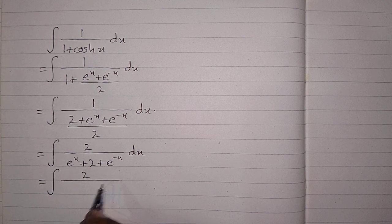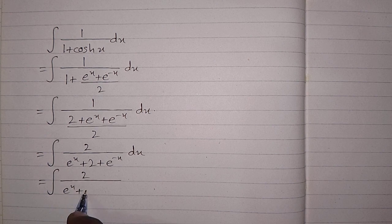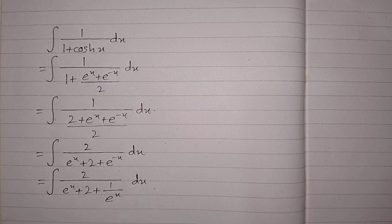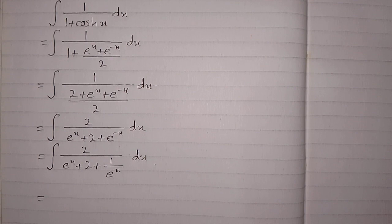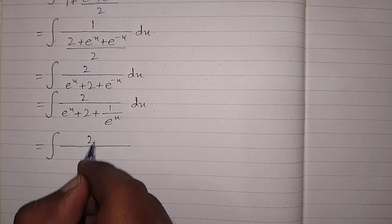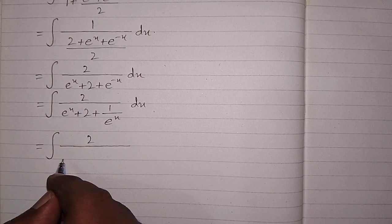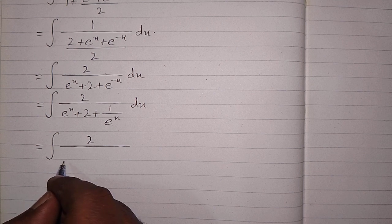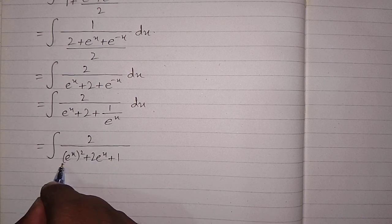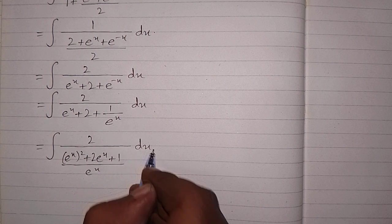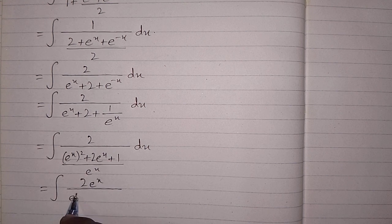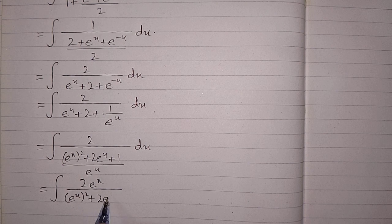This can be written as the integral of 2 upon e to the power x plus 2 plus e to the power minus x, where e to the power minus x can be written as 1 upon e to the power x. So we have 2 upon e to the power x plus 2 times e to the power x plus 1, all upon e to the power x. This simplifies to 2 times e to the power x upon e to the power 2x plus 2 times e to the power x plus 1.